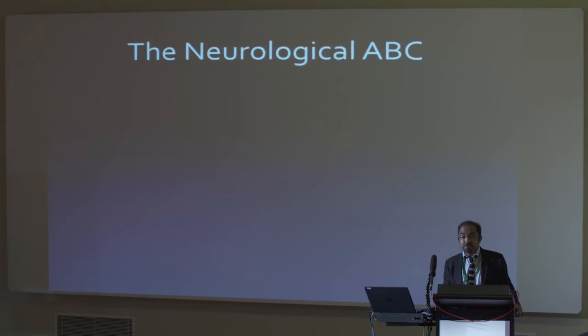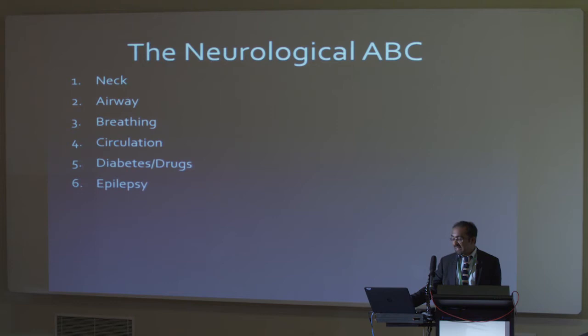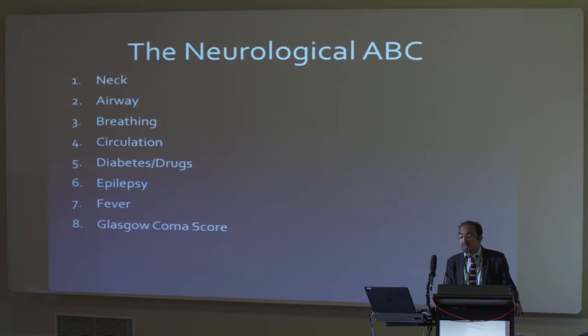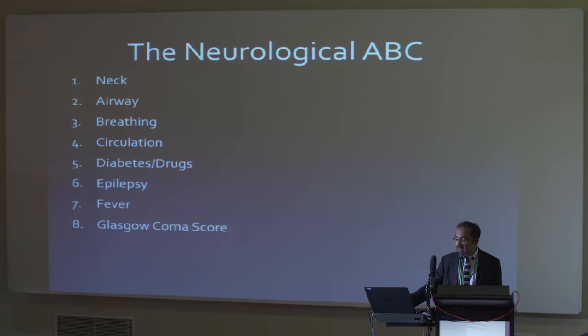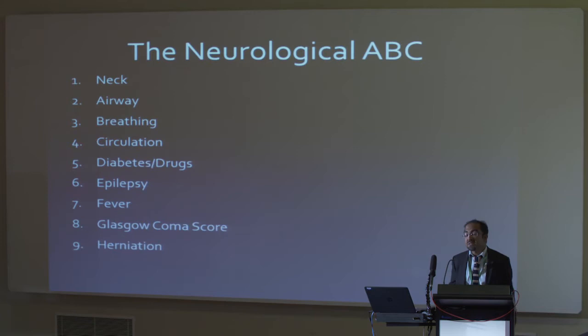There is the neurological ABC, which involves the usual things — looking at the neck first, then dealing with the airway, breathing and circulation. The D, E, F, and G are also worth remembering: D for diabetes and diabetic coma, D for drugs as a cause of unconsciousness, E for epilepsy whether non-convulsive or post-ictal, F for fever as a cause of unconsciousness because of meningitis and encephalitis, and then G for performing the Glasgow Coma Scale. Herniation is also important to consider when first meeting an unconscious patient.